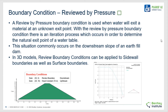A review boundary condition can be utilized where the user does not know where a water table might daylight. A typical use case for a review boundary condition is on the downstream side of an earth dam that is holding back a reservoir. The user will not have a distinct idea where the water table may exit the earth dam, but a review boundary condition can iterate and locate the point of exit. You can see that case illustrated on this slide.